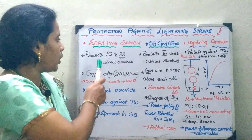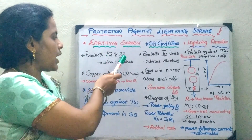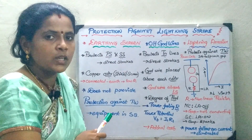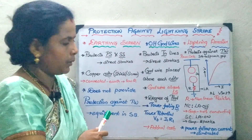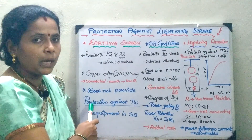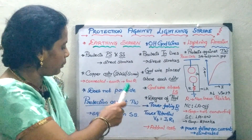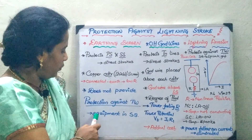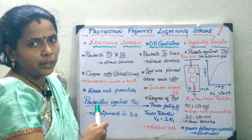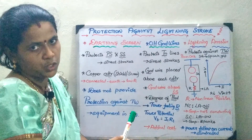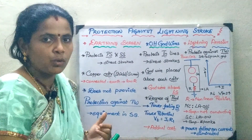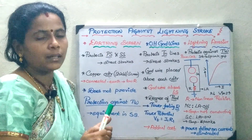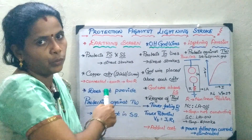In this way you are going to protect the power station as well as the substation against the direct strokes by using your earthing screen. The main drawback is it does not give the protection against the travelling waves, and so it does not give protection for the equipment in the substation against these travelling waves.